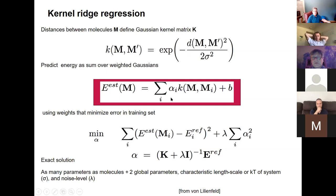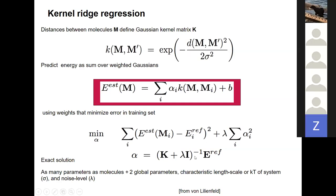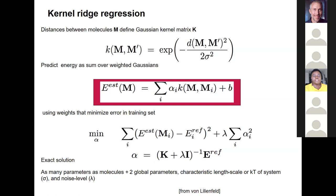With 5,000 training data points, training takes fractions of a millisecond and you have your model. Prediction also takes fractions of a millisecond. Compare this to the standard electronic structure calculation — this approach is about a billion times faster. We can then measure mean absolute error as a function of training data size.